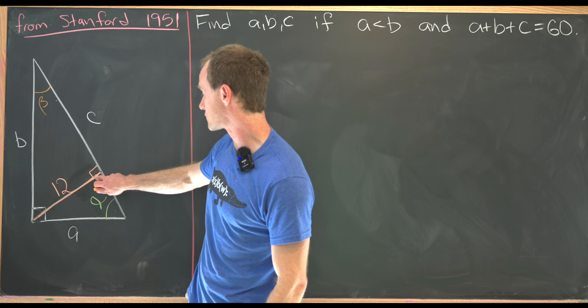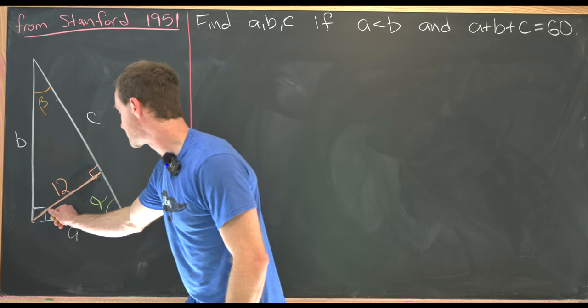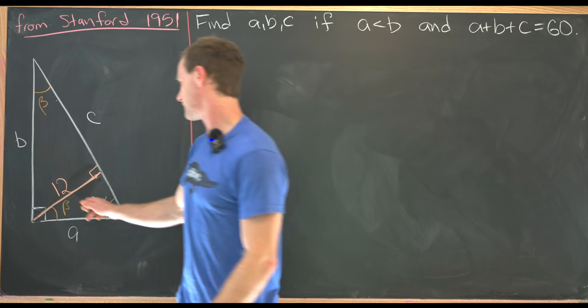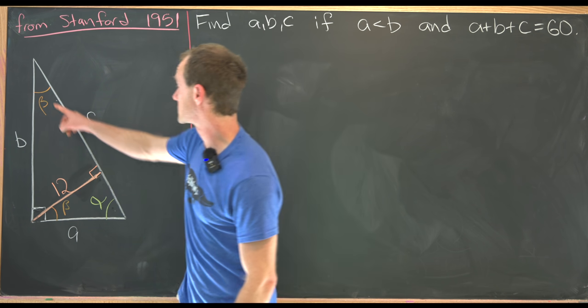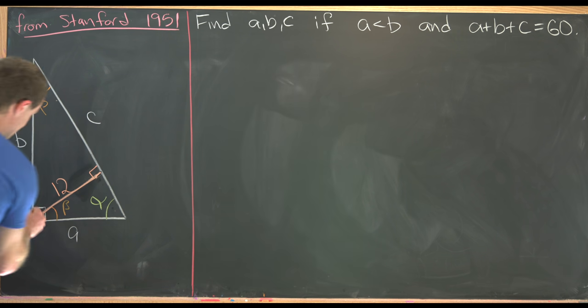But furthermore, we know this right here is a right angle. So if this is alpha, then this measure here must be beta. Again, because we've got a sub right triangle there. And then furthermore, since this is angle measure beta, this is 90 degrees, that means that this angle measure here has to be alpha.